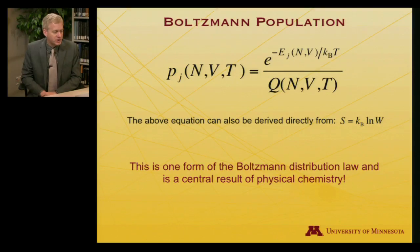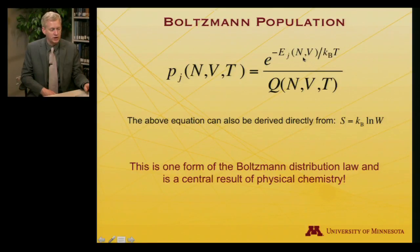Let me finish then with the more complete mathematical expression that the probability of being found in state J, given a fixed N number of particles, V volume and T temperature, is equal to the exponential of minus the energy associated with that number and volume, divided by Boltzmann's constant times the temperature, all divided by the partition function.